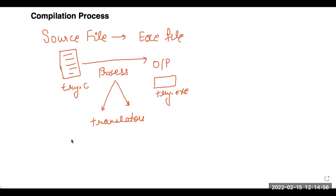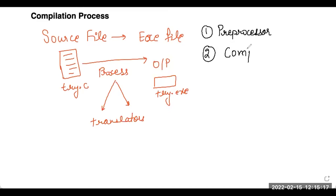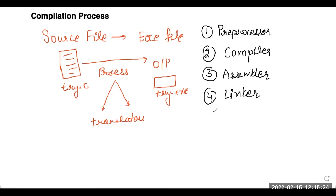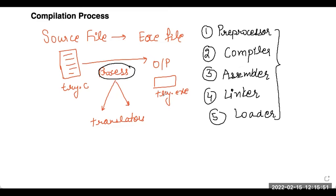Under this, the very first step is the role of the preprocessor. After the preprocessor comes the compiler. Then the third translator is the assembler. Then we will have a linker, and finally a loader. So there are five programs or software which play a key role in the process of compiling a program from .c to .exe. Now let's understand each of these in detail.